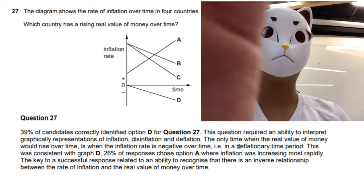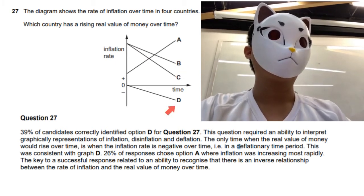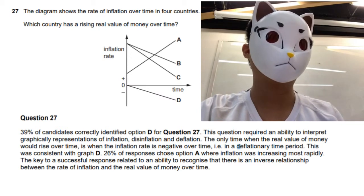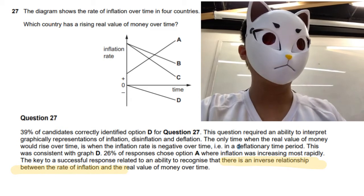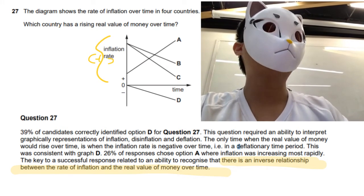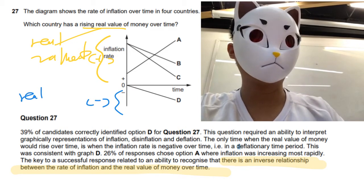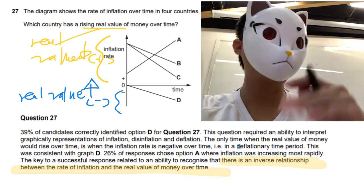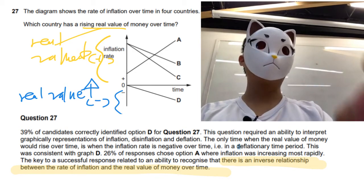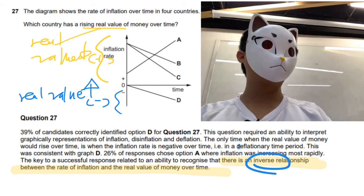This is the last question for Paper 1. This question shows the rate of inflation with three positive values and one negative. It asks about the real value of money. This is a very straightforward question because there is an inverse relationship between inflation and real value of money. If inflation is positive, then the real value would drop.